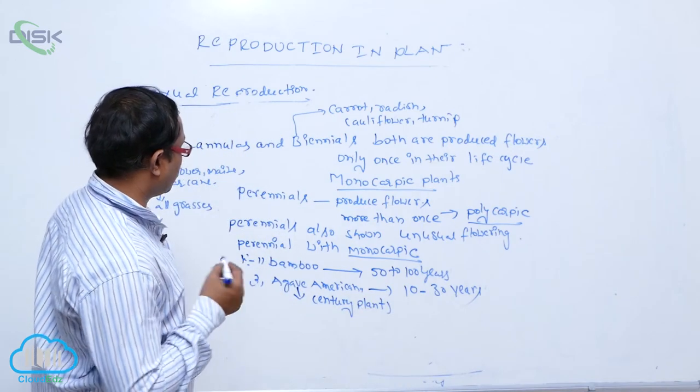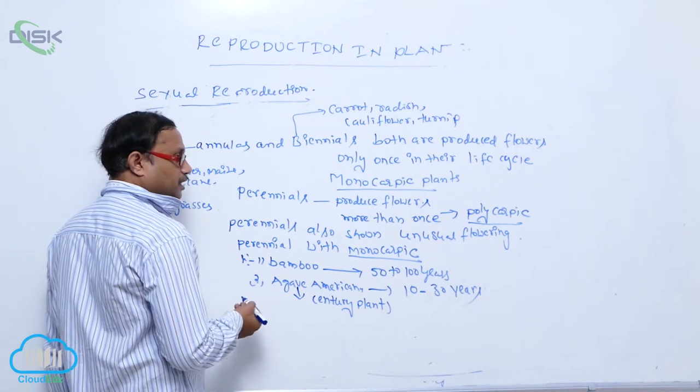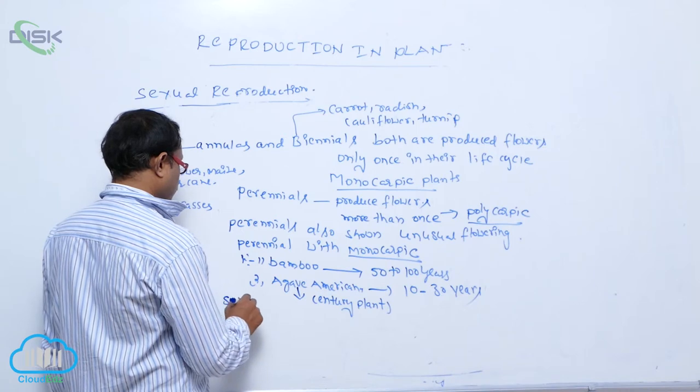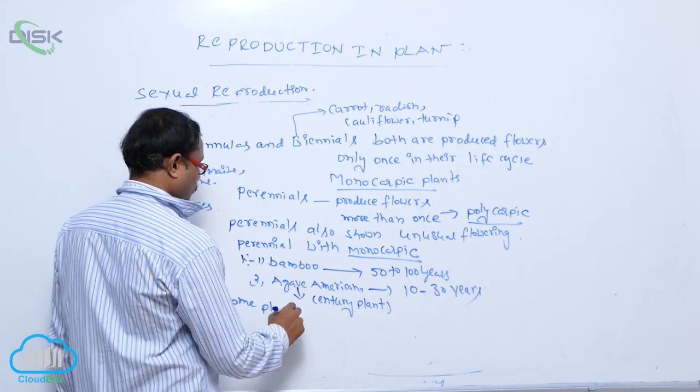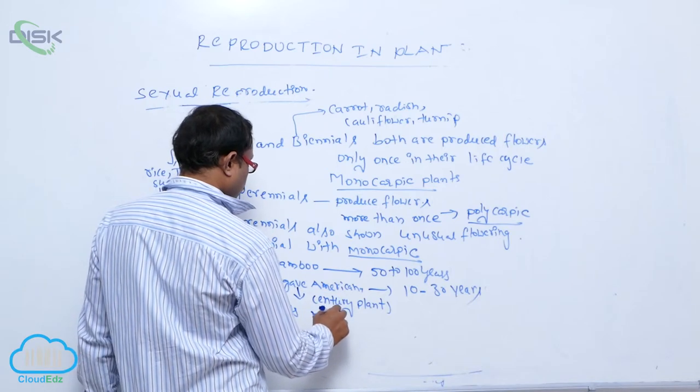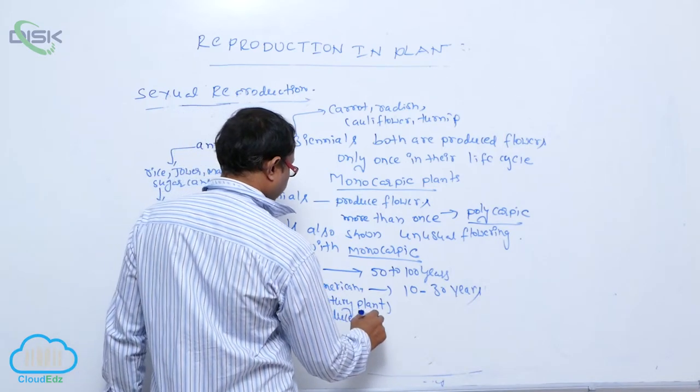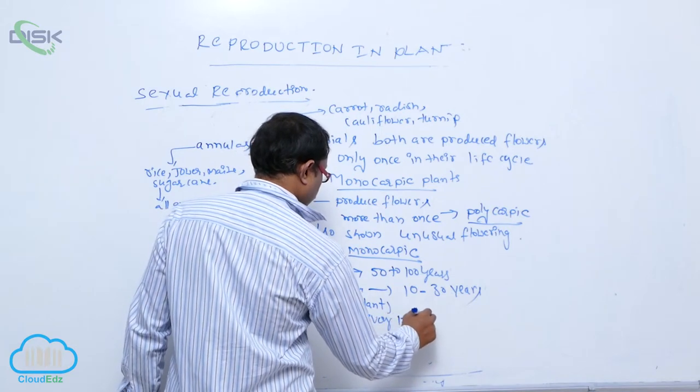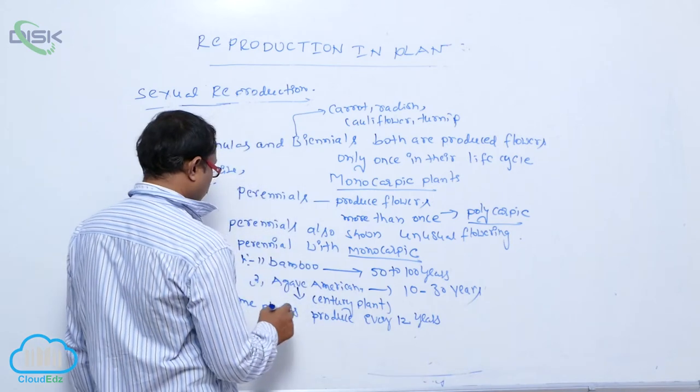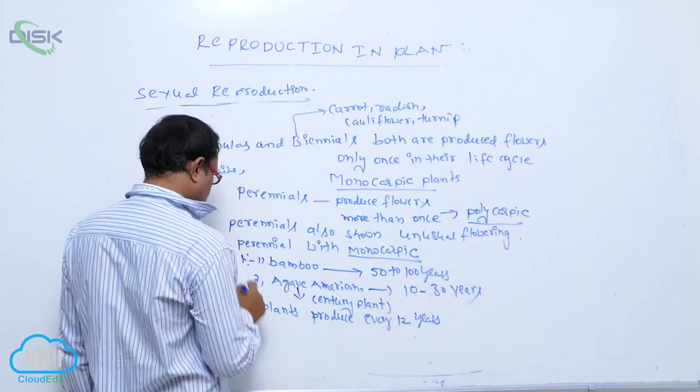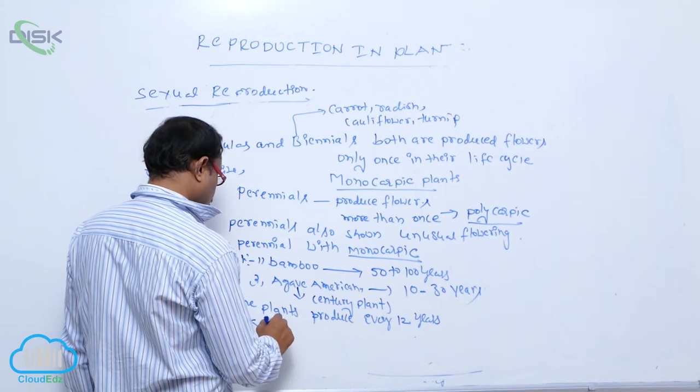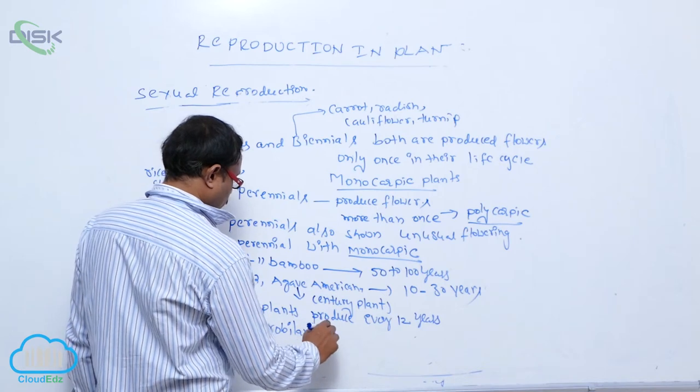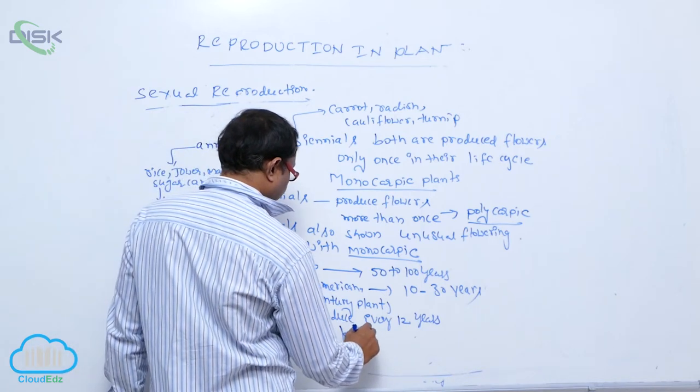After that, some plants produce flowers every 12 years. For example, Strobilanthus kunthiana. It is the scientific name, plant name.